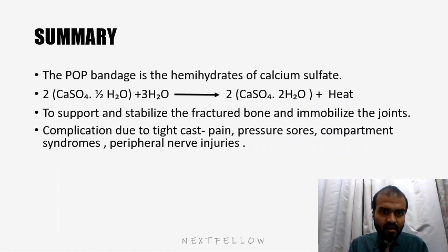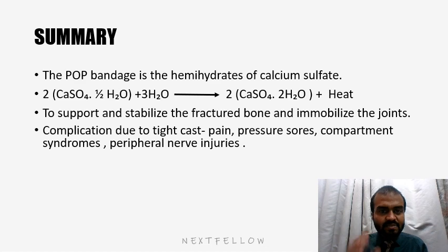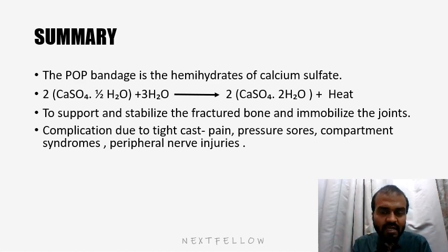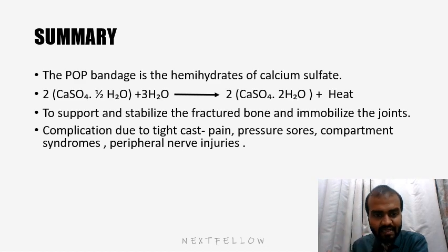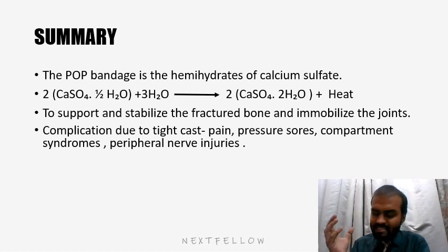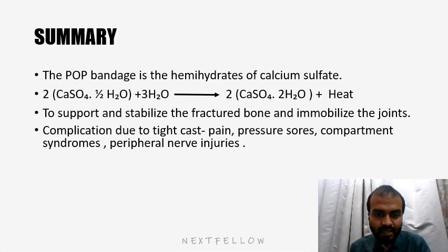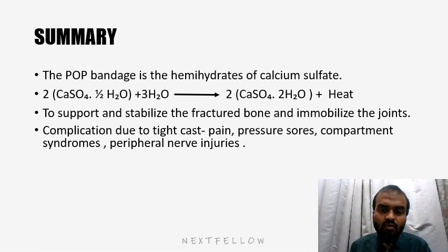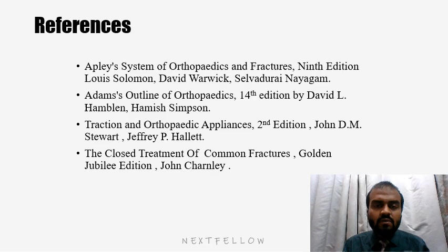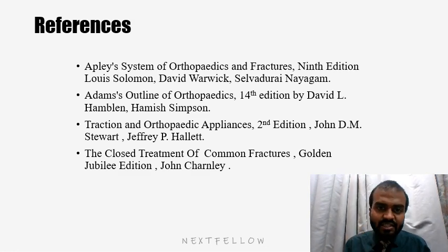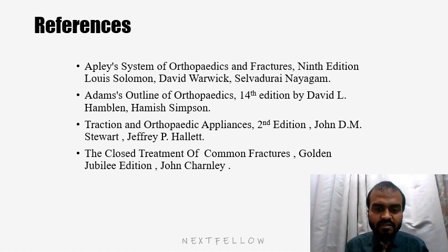To summarize: the POP bandage is a hemihydrate of calcium sulphate; when it comes in contact with water, it gives rise to calcium sulphate and heat — this is an exothermic reaction. POP is used to support and stabilize the fractured bone and immobilize the joint. Complications due to a tight cast are pain, pressure sores, compartment syndrome, and peripheral nerve injuries. For further reading, you can consult 'Traction and Orthopedic Appliances' by John Steveott and 'Close Treatment of Common Fractures' by John Chandler.